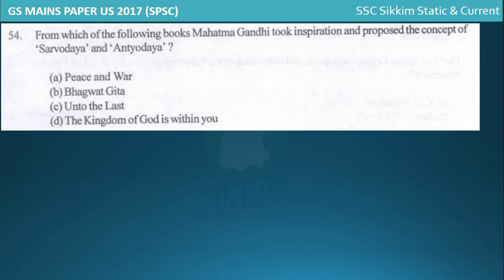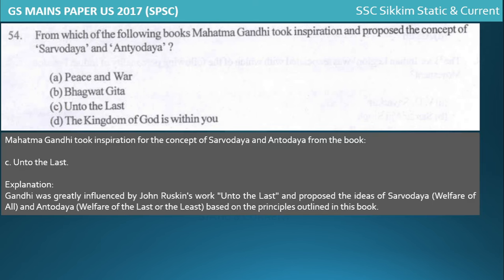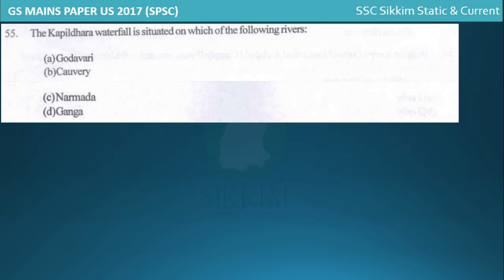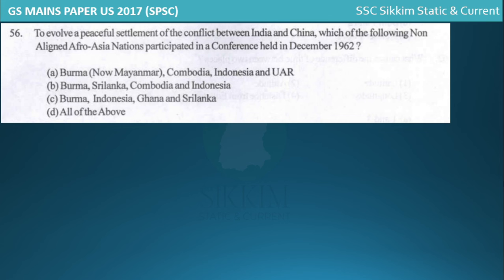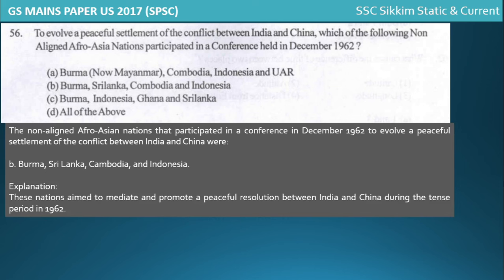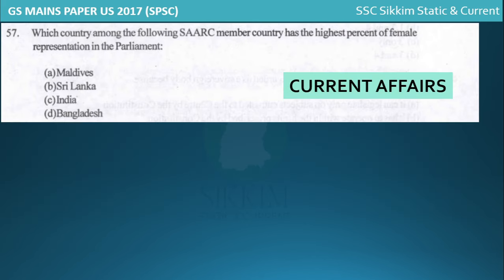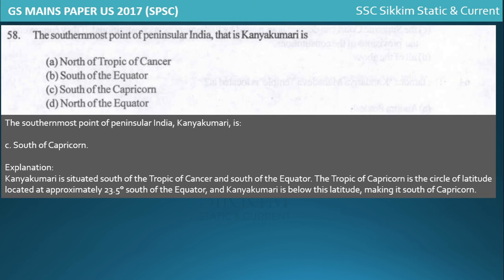Gandhiji got the idea of Sarvodaya from the book 'Unto This Last' by John Ruskin. The Kapil Dhara waterfall is situated on the Narmada River. The non-aligned Afro-Asian nations that participated in the 1962 conference included Burma, Sri Lanka, Cambodia, and Indonesia. The southernmost point of peninsular India is Kanyakumari, which is south of the Tropic of Capricorn.